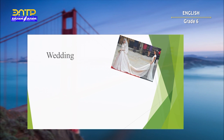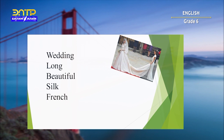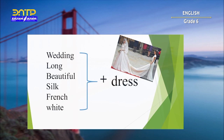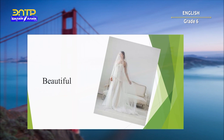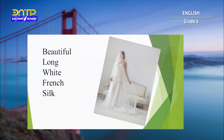Let's do a task where you have to put all adjectives in general order. Here we have a description of a dress: wedding, long, beautiful, silk, French, white. Think and put them in general order. Let's check: beautiful, long, white, French, silk, wedding dress.